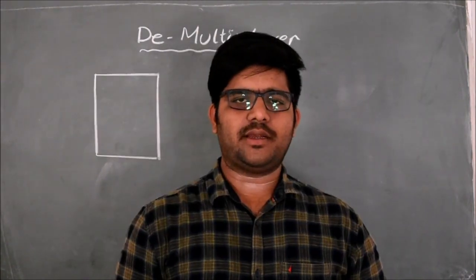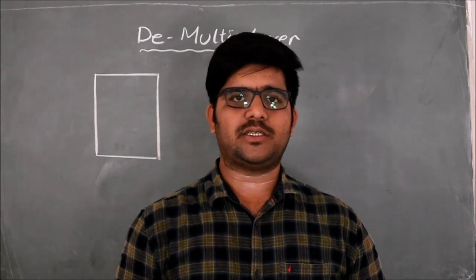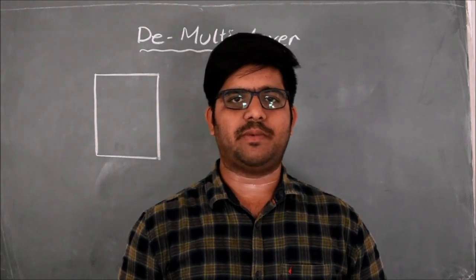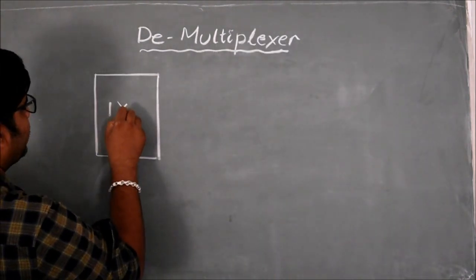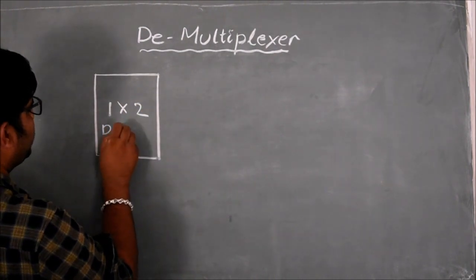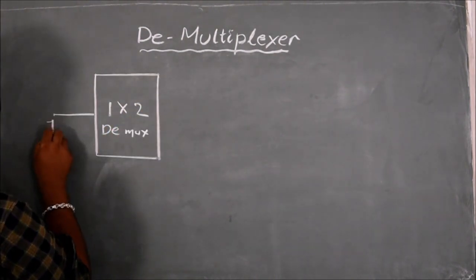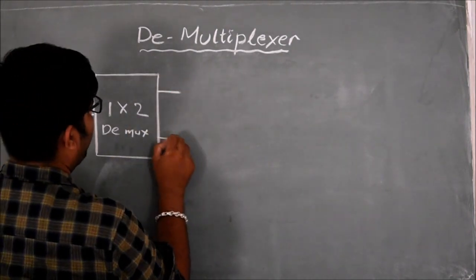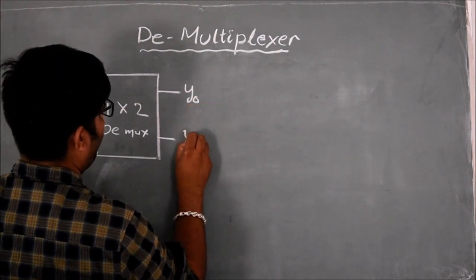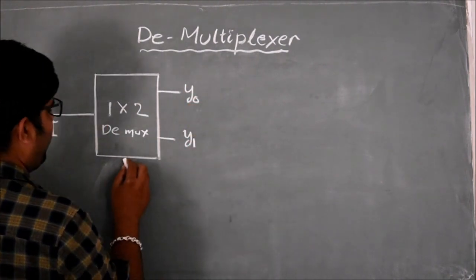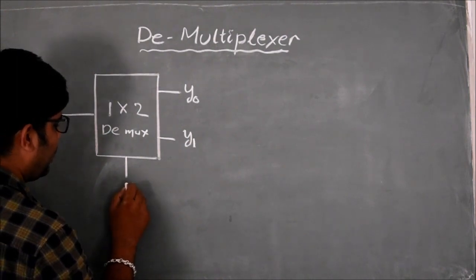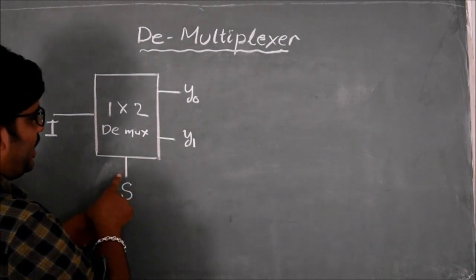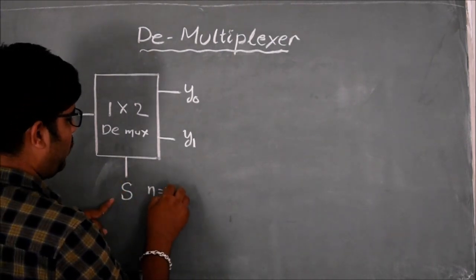Let us consider a 1x2 D-multiplexer. By studying the 1x2 D-multiplexer, we can understand the operation and internal circuits of the D-multiplexer. This 1x2 D-multiplexer has only 1 input line called I and 2 output lines Y0 and Y1, and only 1 selection line, which means N is equal to 1.